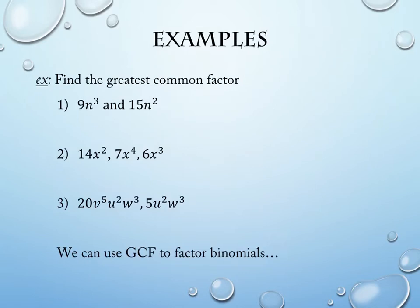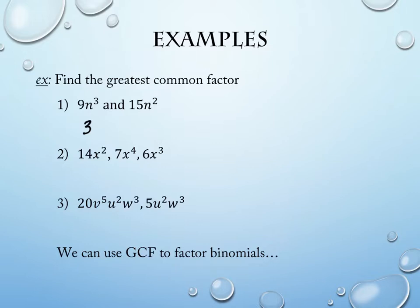Looking at the first two terms: 9n³ and 15n². We want to consider both the biggest coefficient they share and the biggest variable piece they share. The number pieces are 9 and 15. What is the largest number that divides both? 5 won't divide both of them — we want the largest one they have in common, which is 3. So 3 is the largest coefficient.